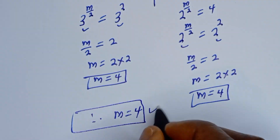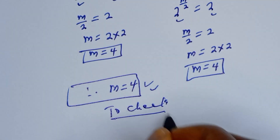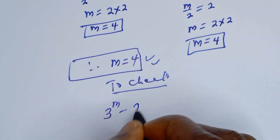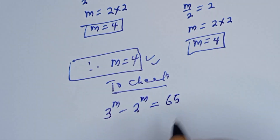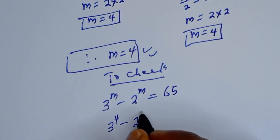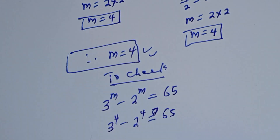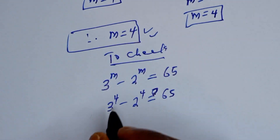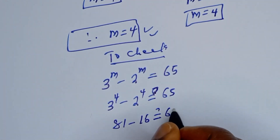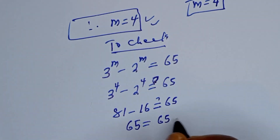We can check to confirm if our answer is correct. Substituting m equals 4 into the original equation: 3 to the power of 4 minus 2 to the power of 4 must equal 65. That is 81 minus 16, which equals 65. It is equal to 65, which is true.